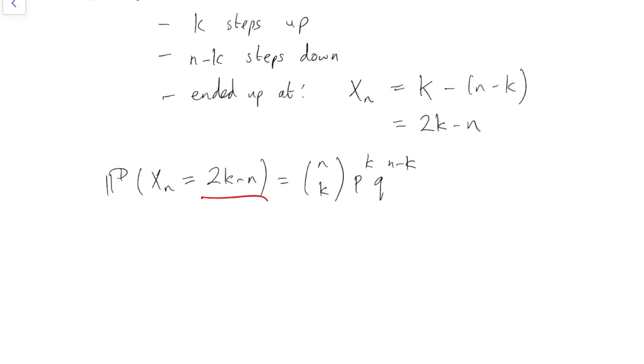Just because probability Xn equals 2k minus n is a bit awkward, let's call that i.